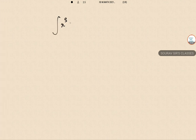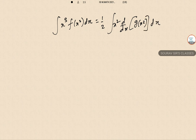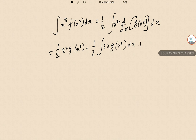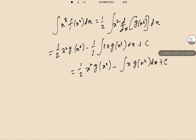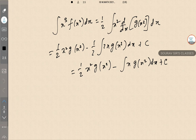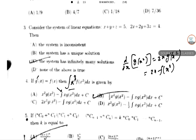The integral of x f(x squared) dx equals (1/2) times x squared times d/dx of g(x squared) dx. Applying integration by parts gives (1/2) x squared · g(x squared) minus (1/2) integral of 2x · g(x squared) dx plus C. This simplifies to (1/2) x squared · g(x squared) minus integral of x · g(x squared) dx plus C.